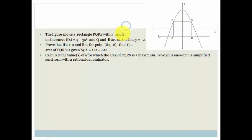So with P and S are on the curve, the parabola, f of x is equal to 4 minus 3x squared, and R and Q lie on the line y equals minus 2. Q and R lie on the line y equals minus 2, so that line there is y equals minus 2. And we know that this is f of x, which equals 4 minus 3x squared.